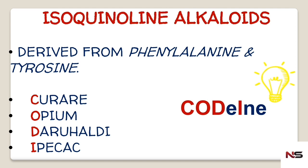In most competitive exams, one question will be there from Opium. For studying these drugs, I made a small trick using the word 'CODINE' — which is already a chemical constituent of Opium. C represents Curare, O represents Opium, D represents Daruhaldi, and I represents Ipecac.